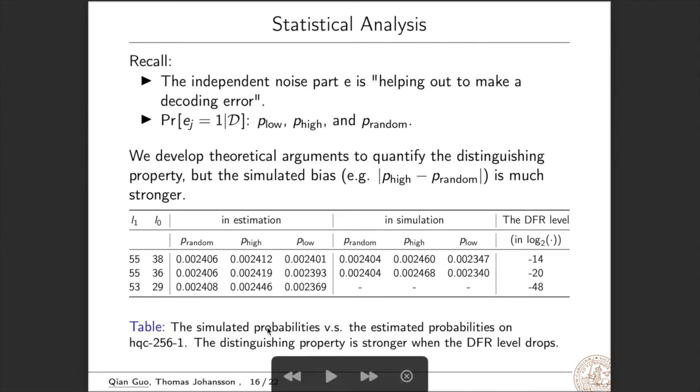For instance, this table contains the simulated probabilities versus the estimated probabilities on HQC 256-1. For this line, we choose L1 to be 55 and L0 to be 38. DFR level is 2 to minus 14. So we see that the bias in simulation is 10 times stronger than the bias in estimation. And from this table, we also see that the distinguishing property is stronger when the DFR level drops.